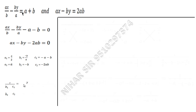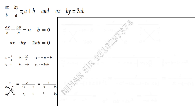Now let us apply the cross multiplication formula. It reads: x over (b1c2 minus b2c1), then y over (c1a2 minus c2a1), then 1 over (a1b2 minus a2b1). You can remember it starts with b1b2 and ends with b1b2. I will now make arrows: b1 multiplied by c2, b2 with c1, c1 with a2, c2 with a1, a1 with b2, and a2 with b1.